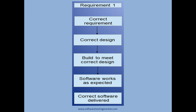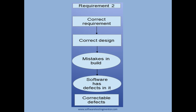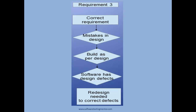In example two, the requirements gathering phase captured the correct requirements, and the designer did the correct design. However, during the build phase, developers made mistakes in the coding. When those mistakes came downstream to the testers in the testing cycle, software defects were found — these are build defects and are correctable. The software tester will find them, raise a defect, assign it to developers, and they'll fix the code to correct those defects as per the correct design.